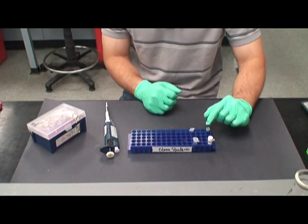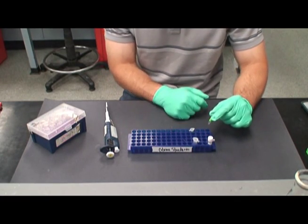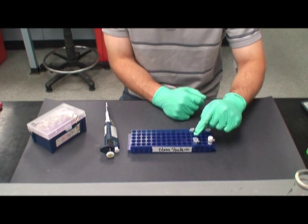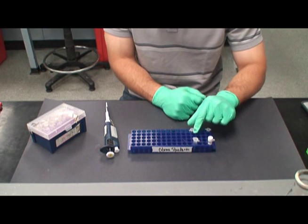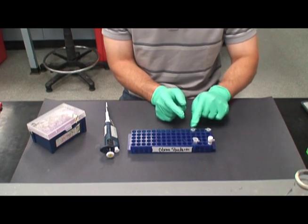Now, 2 microliters of the Hindi 3 will be added only to the Hindi 3 tube, while 2 microliters of water will be added to the undigested tube to keep the volumes equal.